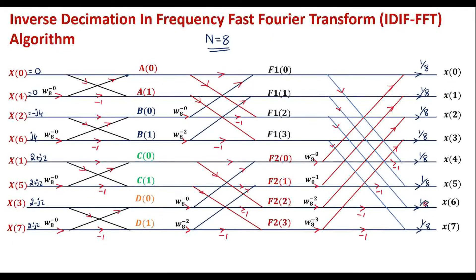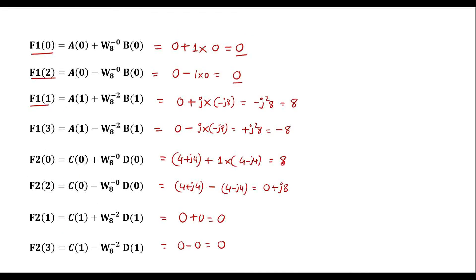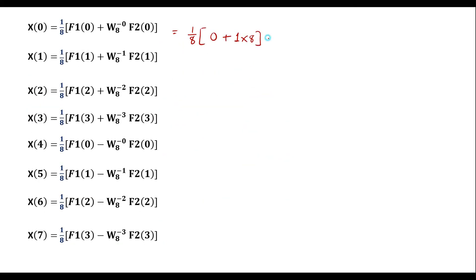Now let's calculate x(n). x(0) = (1/8)·[f1(0) + W8^0·f2(0)] = (1/8)·[0+1·8] = (1/8)·8 = 1. So x(0)=1. x(1) = (1/8)·[f1(1) + W8^(-1)·f2(1)] = (1/8)·[8 + (0.707+j0.707)·0] = (1/8)·8 = 1. So x(1)=1.